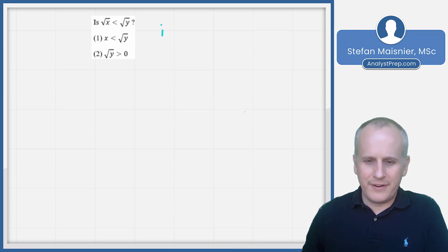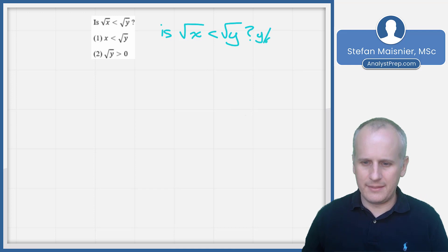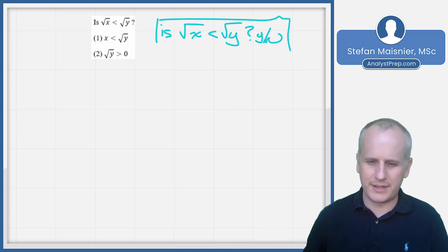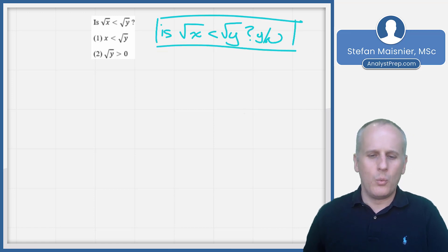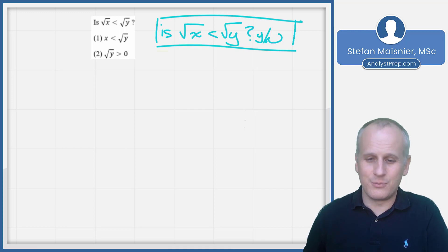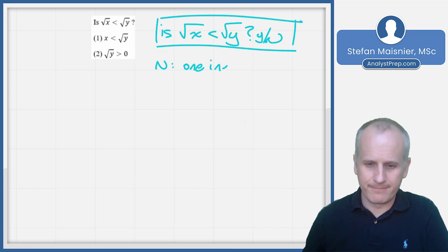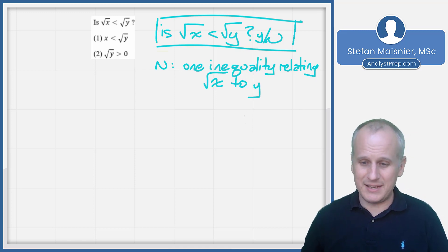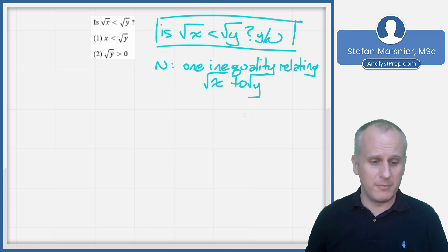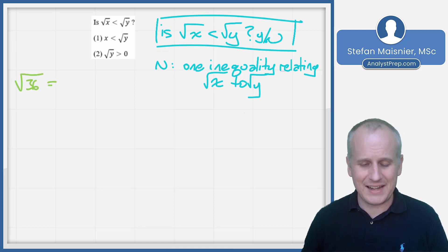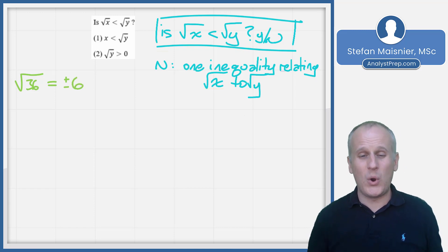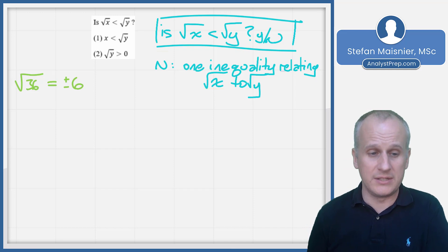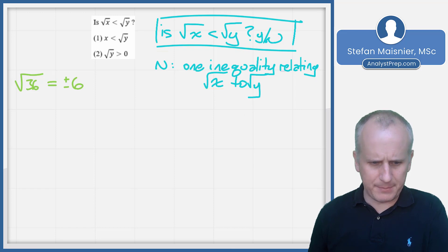Now let's look at a sample data sufficiency problem. We're asked: is the square root of x less than the square root of y? This is a yes-no data sufficiency, so we box off what we're being asked for. We don't know much — we don't even know if these are integers. We need one inequality relating the square root of x to the square root of y. Be aware that square roots can yield positive or negative values: the square root of 36 could be positive or negative 6. Keep positives and negatives in mind when dealing with inequalities and exponents.